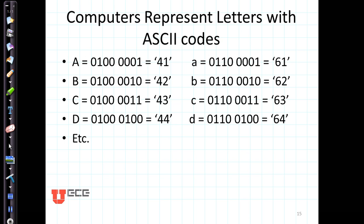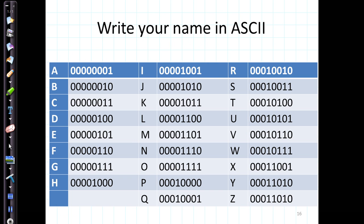Computers represent letters with a code called ASCII. We use a single byte to represent A as 01000001. We also say this is a 41, so A is equal to forty-one. B is 42, C is 43, and so on. Small a is still going to have the one on the end, but instead of having a four, it's going to have a six, et cetera. So just for fun, why don't you stop this recording and see if you can write your name in ASCII code.